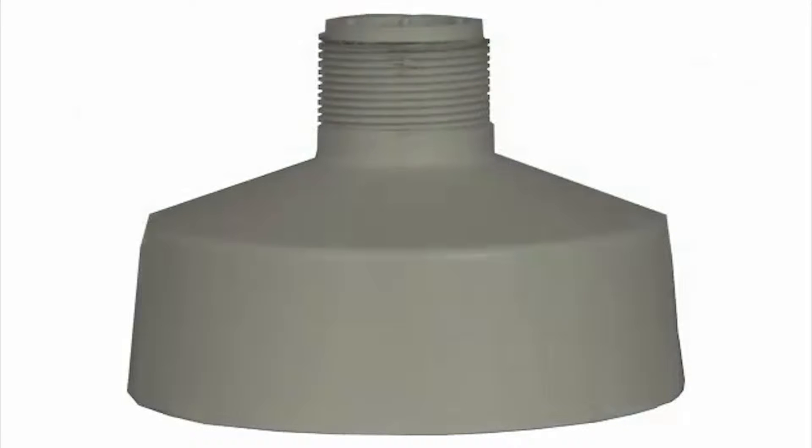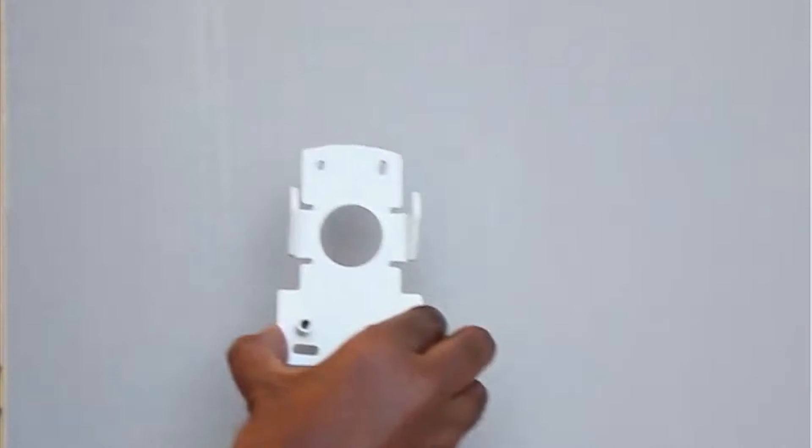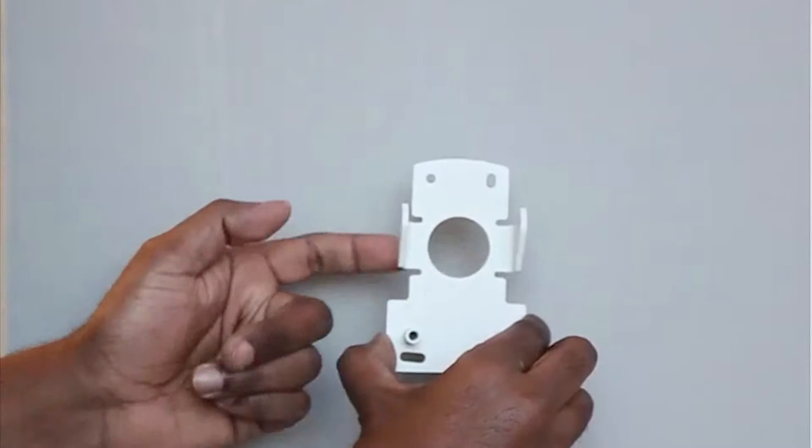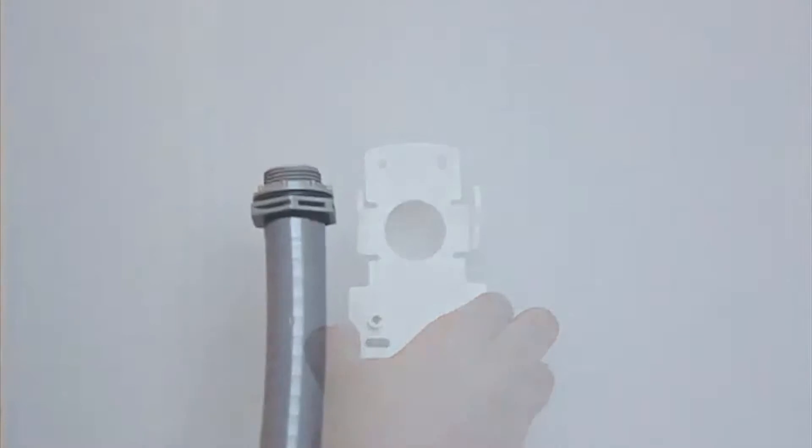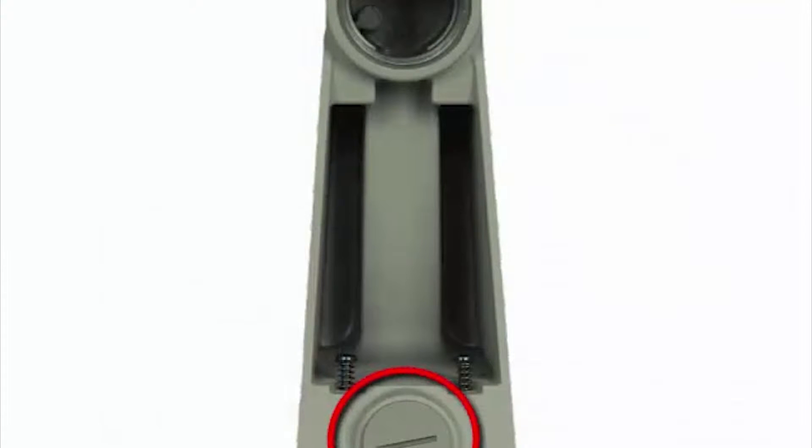Start with determining where the cable enters the pendant wall mount. If you are pulling the cable from inside the mounting surface, use the cable entry hole at the rear of the pendant wall mount. If you are pulling the cable through an external conduit pipe, use the 3/4 inch NPT pipe entry hole on the bottom of the pendant wall mount.